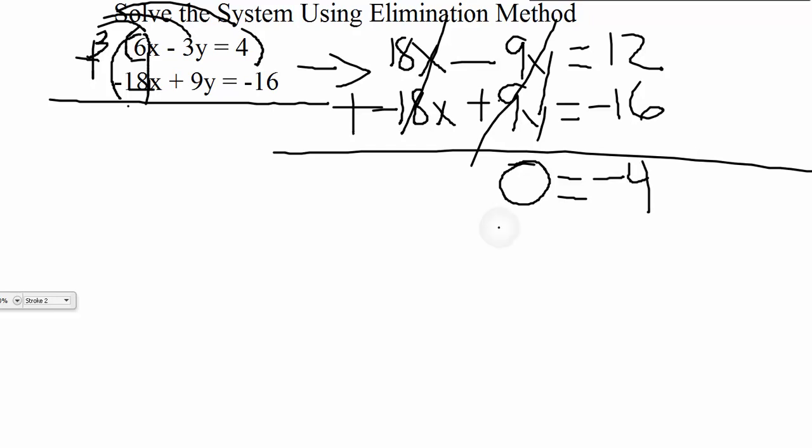So take a look at our answer here: 0 equals negative 4. Now, 0 does not equal negative 4. There's no possible way that those are equal to each other. So this is what a no solution would look like. You get an answer that does not make sense. It just means this is unsolvable. There is no solution to it. These lines are just never going to intersect. They're never going to have any points in common, which is what this means.